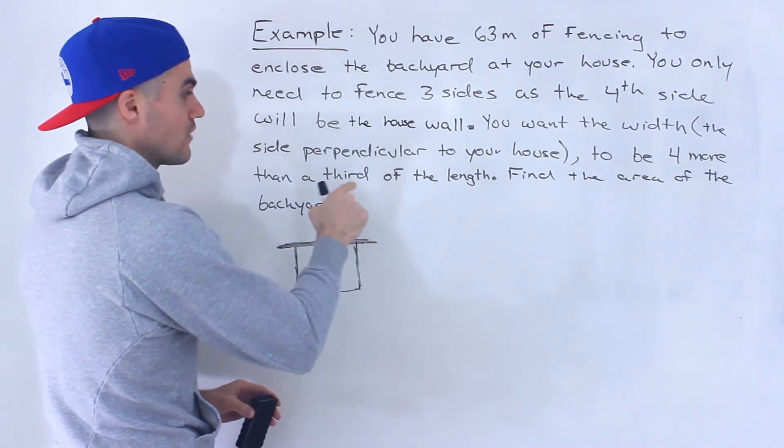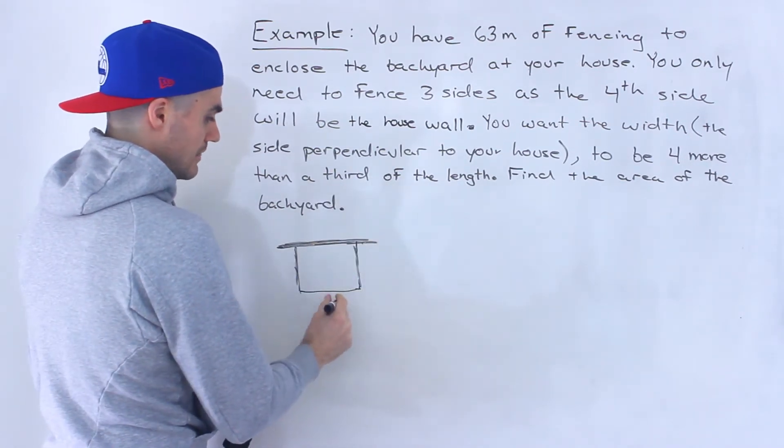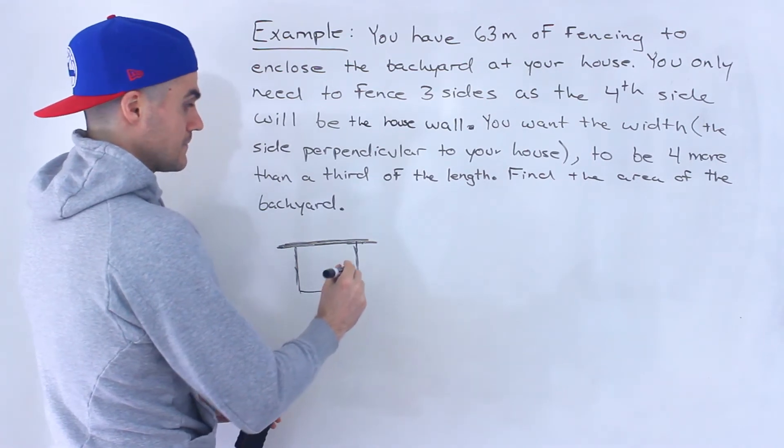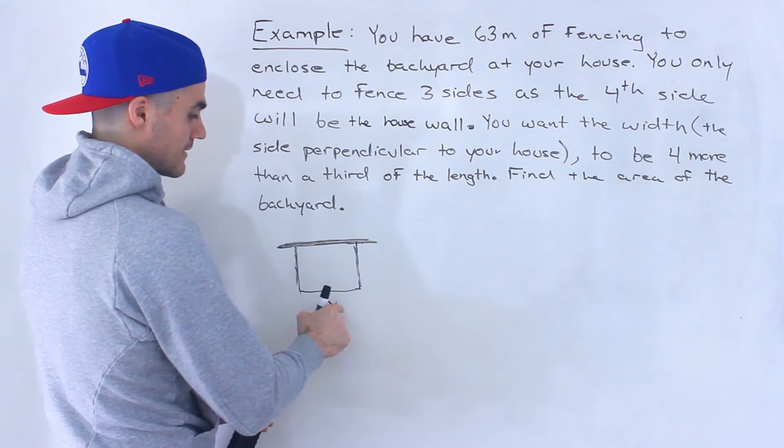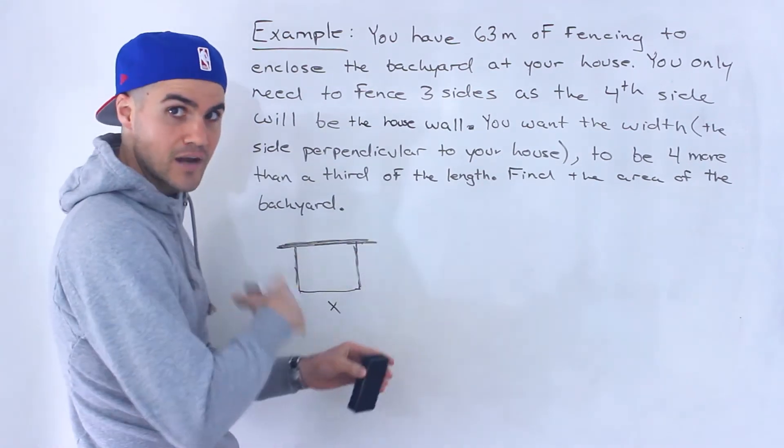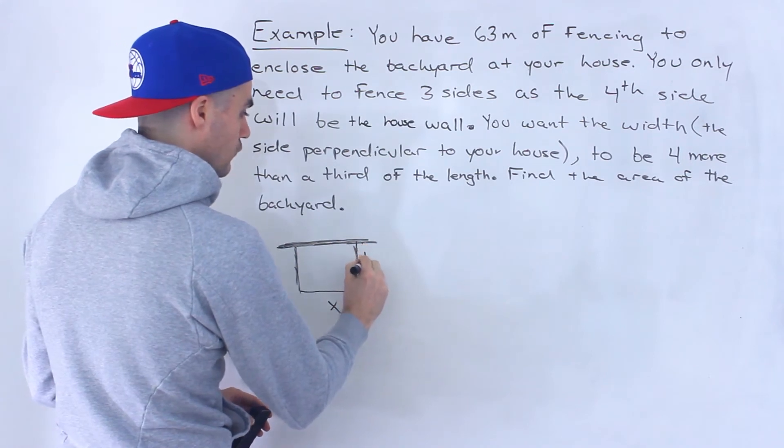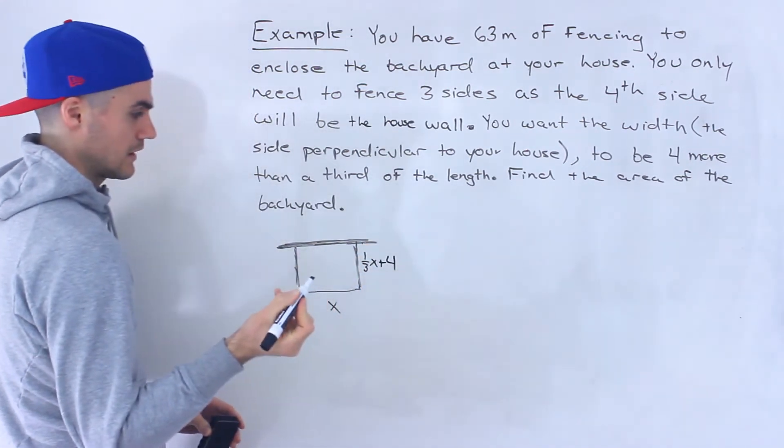You want the width to be four more than a third of the length. So if we let the length be x, what they're saying is that they want the width to be four more than a third of the length. So if we take the length, if we divide it by three, that's going to be a third, four more than that. So it would be one over three x plus four.